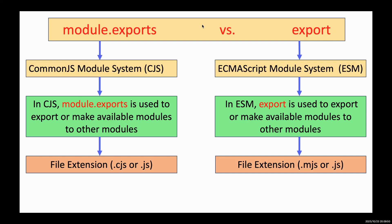module.exports is a keyword provided by the old CJS module system traditionally used in Node.js. It makes a module available for use in other modules using the require keyword, whereas export is a syntax keyword introduced in the ESM module system. It does the same job and makes a module available using import keywords.